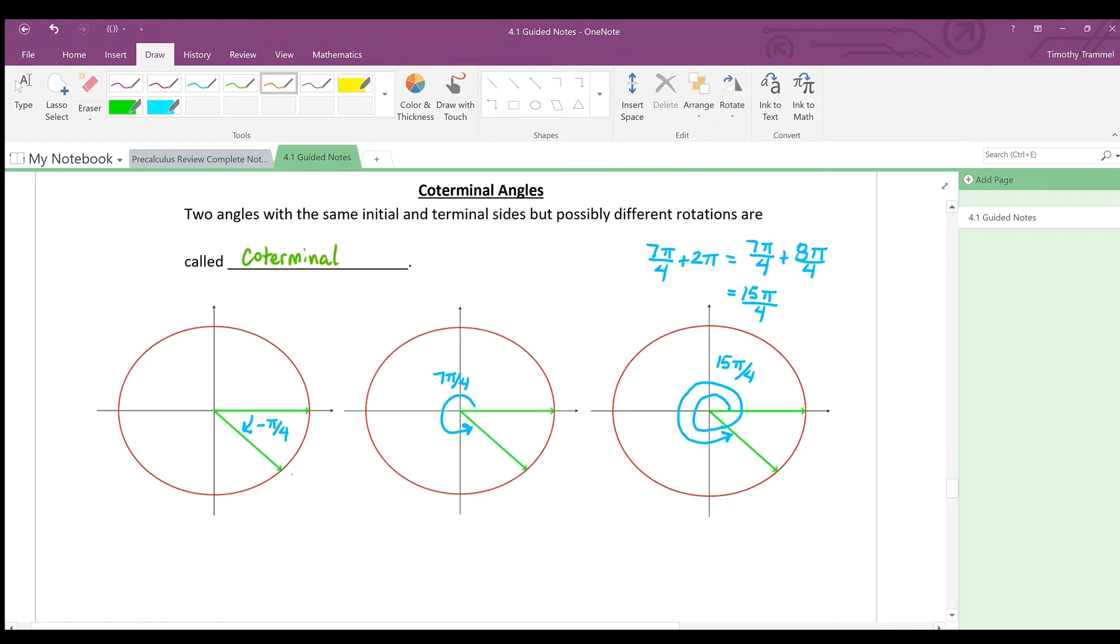Before we scroll down any further, I want to show you all one more thing. So, this angle right here, this minus π over 4, we could have actually also gotten that angle from 7π over 4, just like we got this 15π over 4 from the 7π over 4. And we do it in a very similar fashion. We added an extra revolution to get the 15π over 4. Well, how about we take away a revolution or revolve in the other direction. If I were to go minus 2π, we have 7π over 4 minus 8π over 4. And you can probably already see it. This gives us minus π over 4.